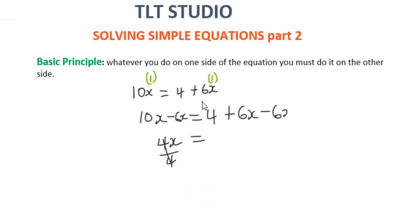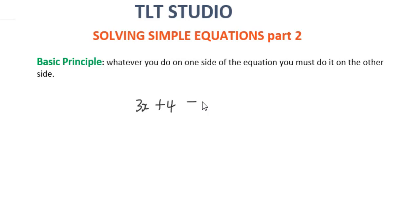Alright, let us look at a second question. Let us jump right in. Second question is 3x plus 4 equals 2x plus 6. As I said, the first thing you do is to get all like terms on one side and then you solve for x.